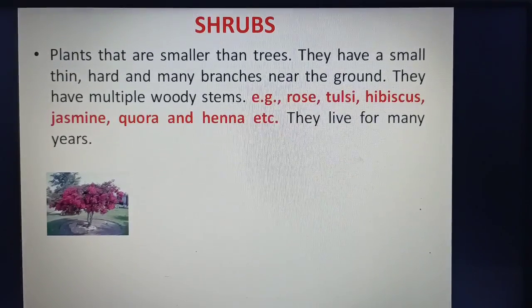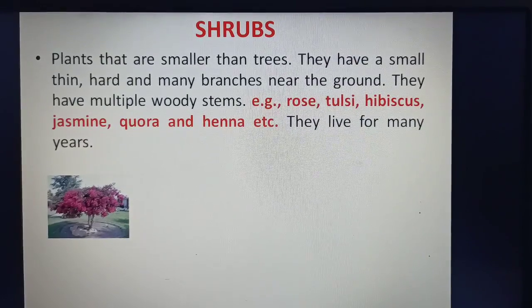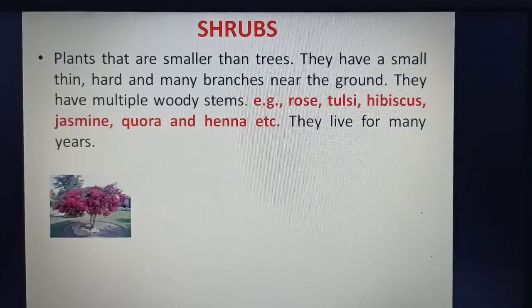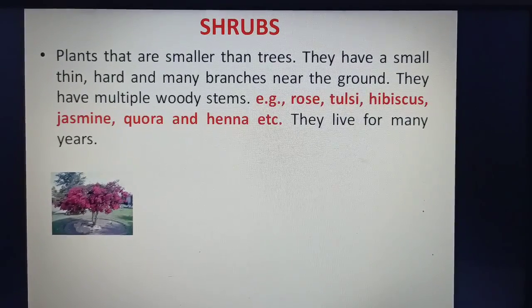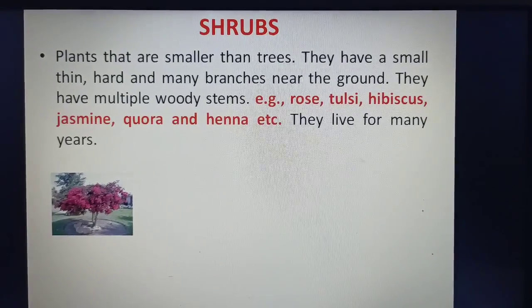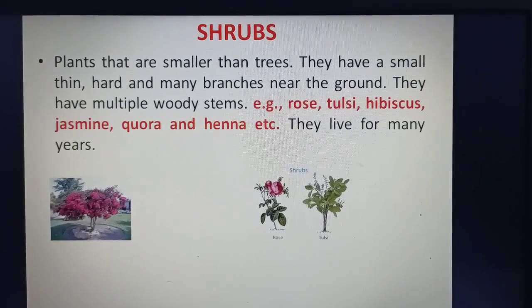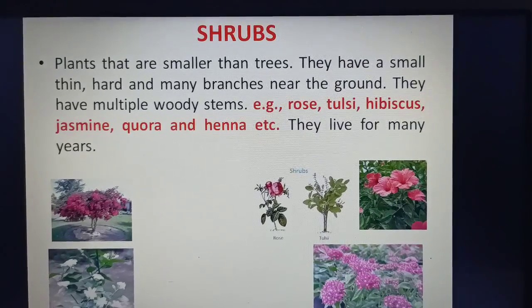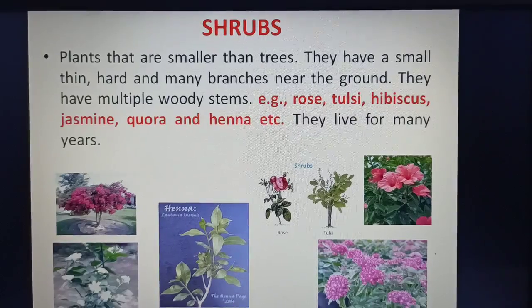Shrubs: Plants that are smaller than trees. They have a small, thin, hard stem with many branches near the ground. They have multiple woody stems. Some examples of shrubs are Rose, Tulsi, Hibiscus, Jasmine, Quara and Hina. These plants live for many years.